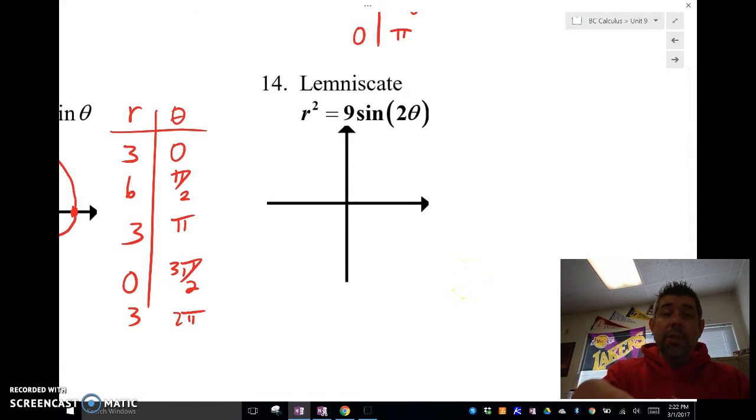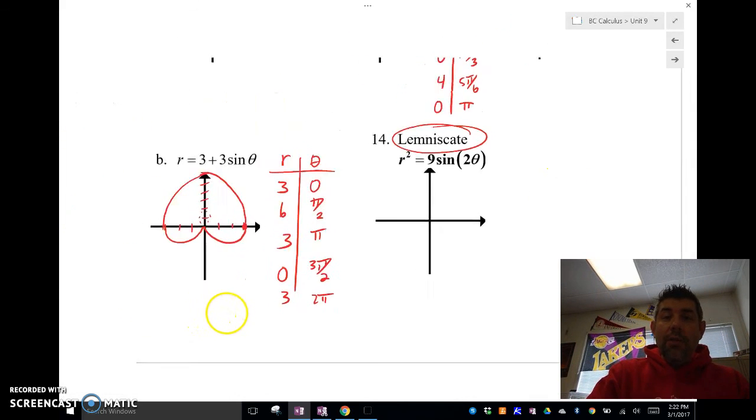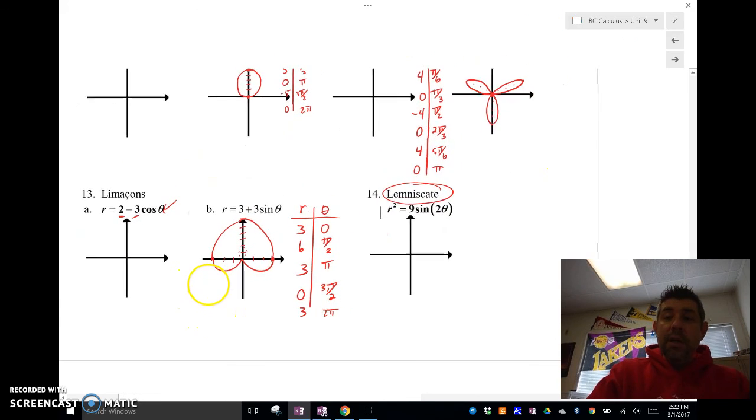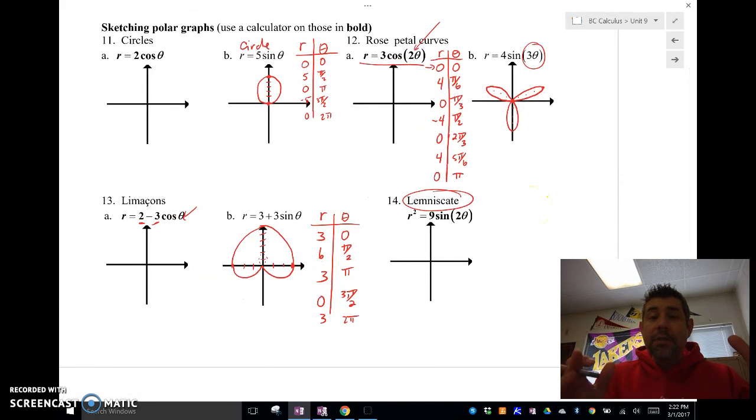And in my last one, I'm going to talk about a lemniscate. And a lemniscate looks like an infinity symbol. But again, I'll do that on the calculator. So there you go. You've got three types of polar coordinates, polar graphs you'll need to be able to do. A circle, a rose petal, and a limasson. We'll see you later. Bye.